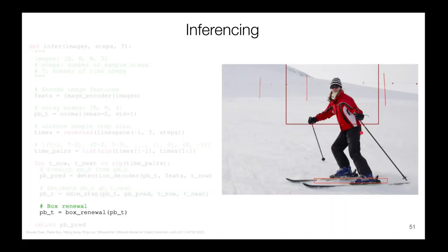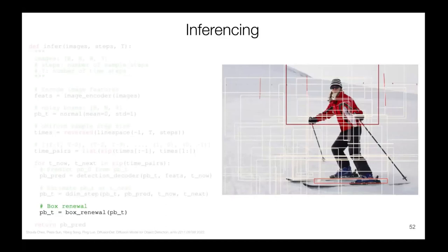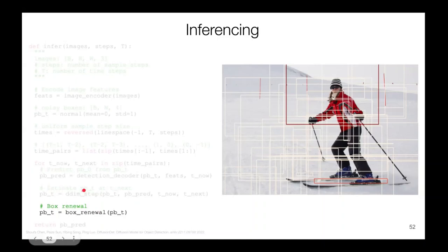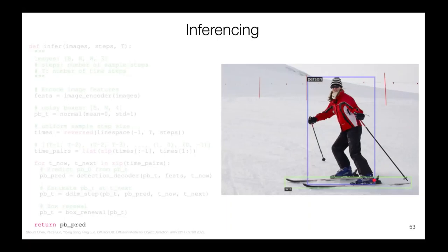Then we do box renewal: any noisy box we don't want is dropped. Since all noisy boxes in the denoising process are randomly sampled from a Gaussian distribution, we pull in new noisy boxes to pad back to the N-evaluation number. Hopefully some of these new noisy boxes will be better estimates than before. This is the inner sampling loop that we run, hoping it gets better with each sampling stage. Finally, we output the final box coordinates and class labels.